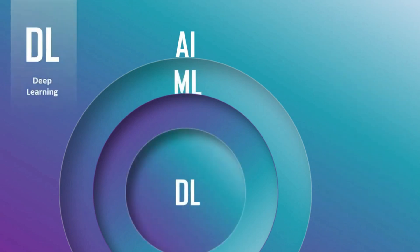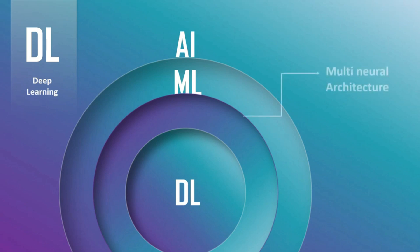The third part is deep learning. Deep learning is again a subset of machine learning. Why did deep learning get created? Scientists thought - can we make machines learn like how we, with the help of the human brain, actually try to learn things? That was the main idea behind deep learning. In deep learning you create an architecture called multi-layer neural network architecture. The main idea is to mimic the human brain.